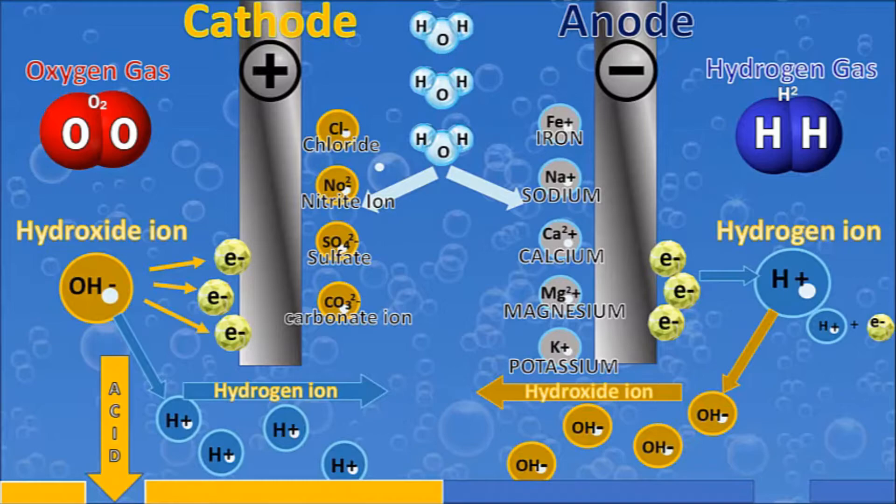Down this pipe, the acidic water goes down, and this is the water that we use for other things like cleaning and disinfecting. On the other side is where the Kangen, the beautiful Kangen water, gets created.